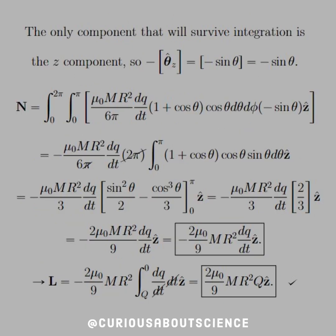Nonetheless, we simplify that down and we see that we get dN of mu naught M r squared over 6 pi dq/dt times 1 plus cosine theta times cosine theta d theta d phi in the theta hat direction. As you might expect, the only component that survives integration is the z component. So negative theta z gives you negative sine once we're done. So no double negatives here. We like that. Then, of course, to find the torque, just take the integrals, 0 to 2 pi, 0 to pi, respectively, plug in the direction. Cancel it down. See what you can get.